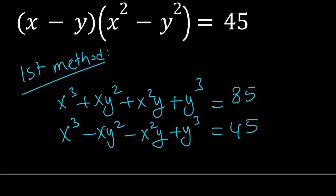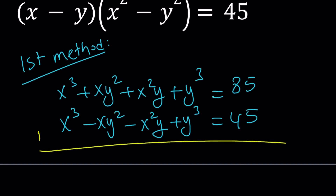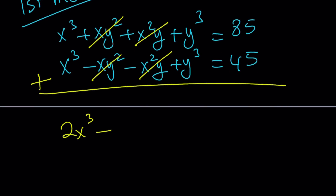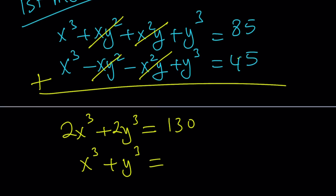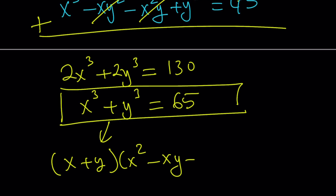I'm going to add these two equations. That cancels out the xy squared and x squared y terms, and we end up with 2x cubed plus 2y cubed equals 130. Dividing both sides by 2 gives x cubed plus y cubed equals 65. This can also be factored as x plus y times x squared minus xy plus y squared equals 65, which we'll use later.